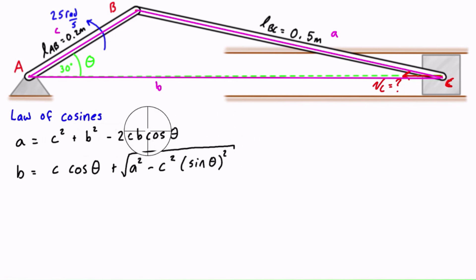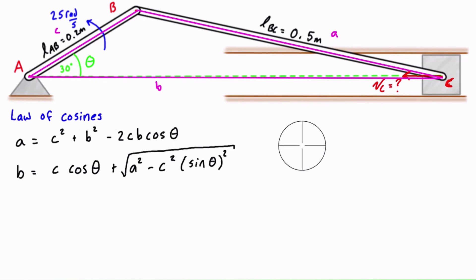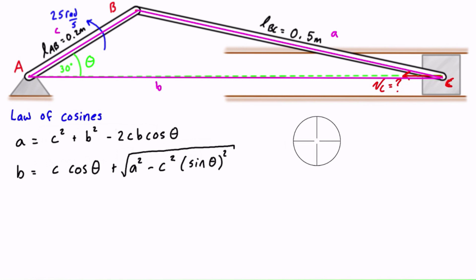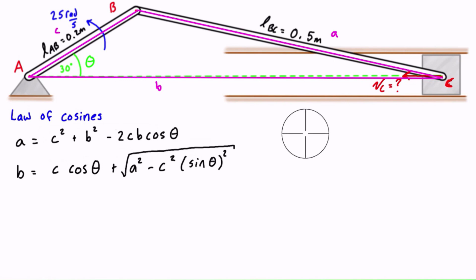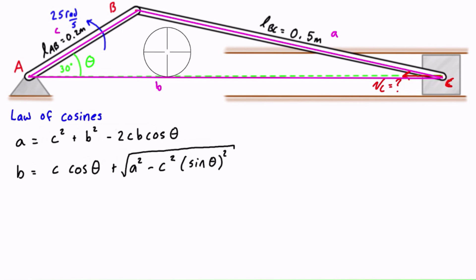Not every problem is going to use the law of cosines to find this expression. For example, problems like a ladder slipping down a wall have two sides of the triangle changing length as one angle changes. It's a simpler problem because it's a right-angle triangle, so you can usually get away with simple sine or cosine functions. But let's focus on the crankshaft problem, which does use the law of cosines.